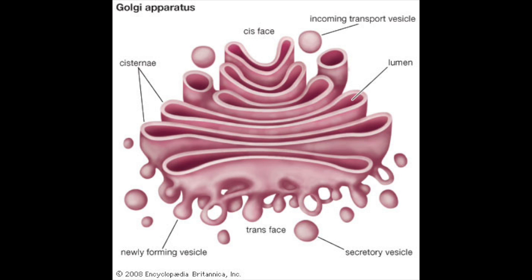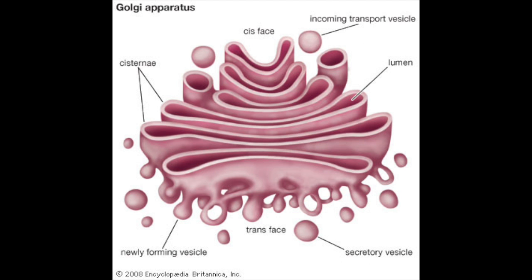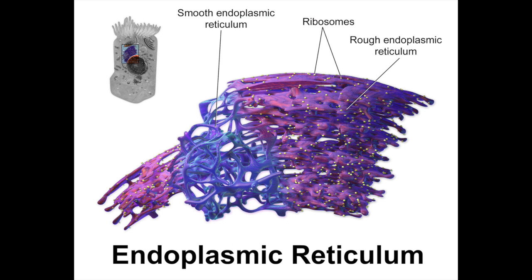The Golgi apparatus sorts and packs proteins, lipids, and fats to be exported by the endoplasmic reticulum. It kind of looks like a vent with lots of tubes, because it passes materials to the endoplasmic reticulum.